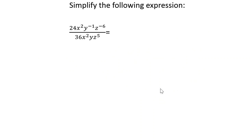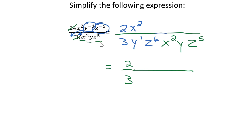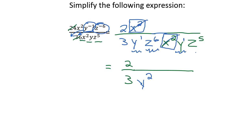Here is another simplifying problem with negative exponents — there are two of these. Pause the video, work it out, and press play when ready. The first step was to reduce 24 and 36: both divisible by 12, giving 2 over 3. x squared stayed on top. y to the negative 1 moved down to become y to the positive 1. z to the negative 6 moved down to become z to the positive 6. x squared, y, and z to the 5th were all positive so they stayed on the bottom. x squared over x squared cancels to 1. y to the first plus y on the bottom gives y squared. z to the 6th and z to the 5th on the bottom gives z to the 6 plus 5, or z to the 11th.